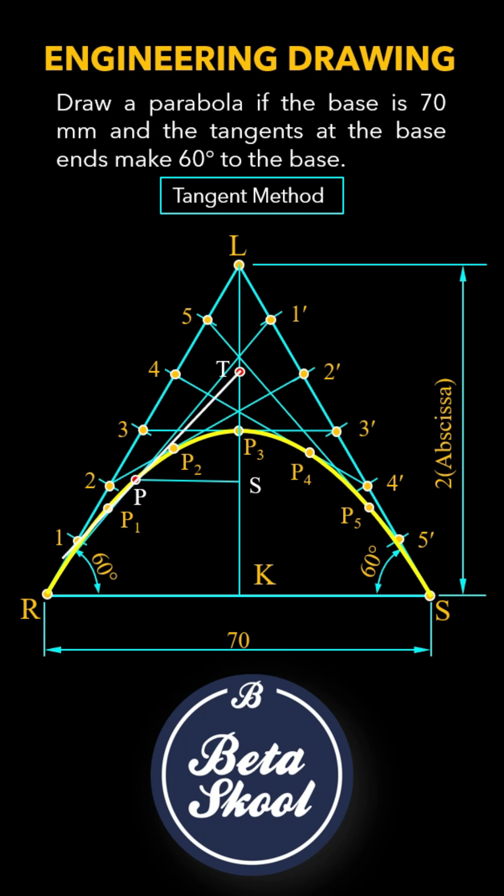At P, draw a perpendicular to the tangent line TT. This is the normal NN. And that's it.